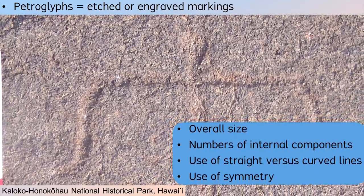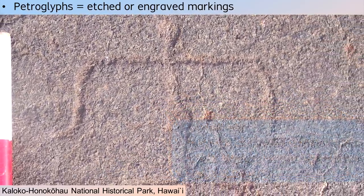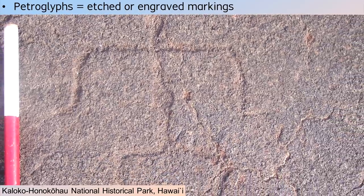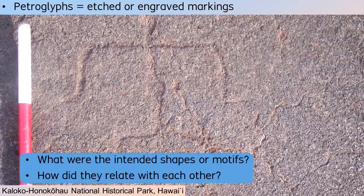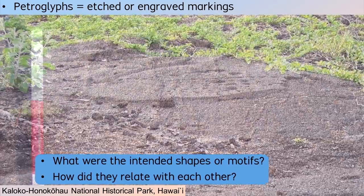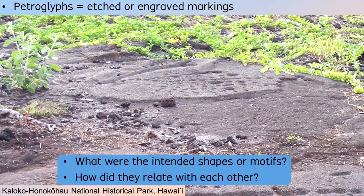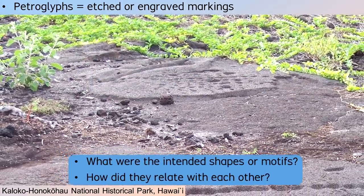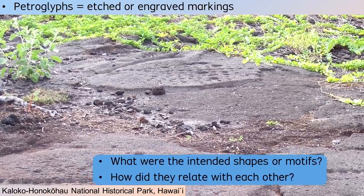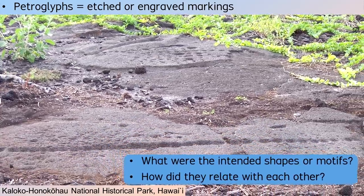In many parts of the world, petroglyph motifs include human figures, animals, and arrangements of circles or lines. Typically, some motifs defy easy identification and they tend to be categorized as geometric shapes.